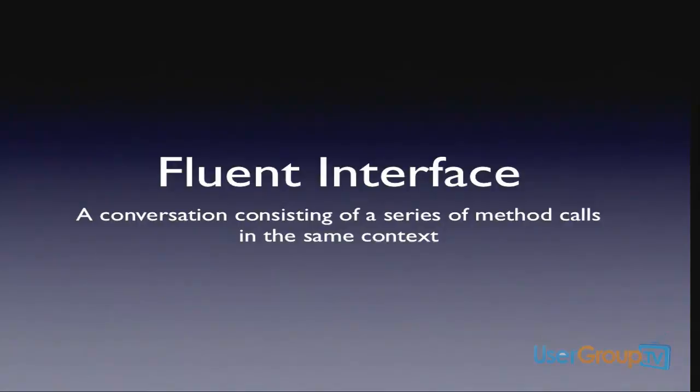Has anybody used the fluent interface before? How many of you use Fluent NHibernate? So you understand from that experience what I'm talking about. You're not talking about newing up an object and setting a bunch of properties and calling an API call. We're talking about something that's much more descriptive — if you were reading through the code you might more easily grasp what that piece of code is trying to do versus looking at properties and reading API docs.